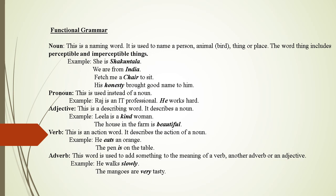Noun: This is a naming word. It is used to name a person, animal, thing, or place. The word 'thing' includes perceptible and imperceptible things. Examples: She is Shakuntala. We are from India. Fetch me a chair to sit. His honesty brought good name to him.